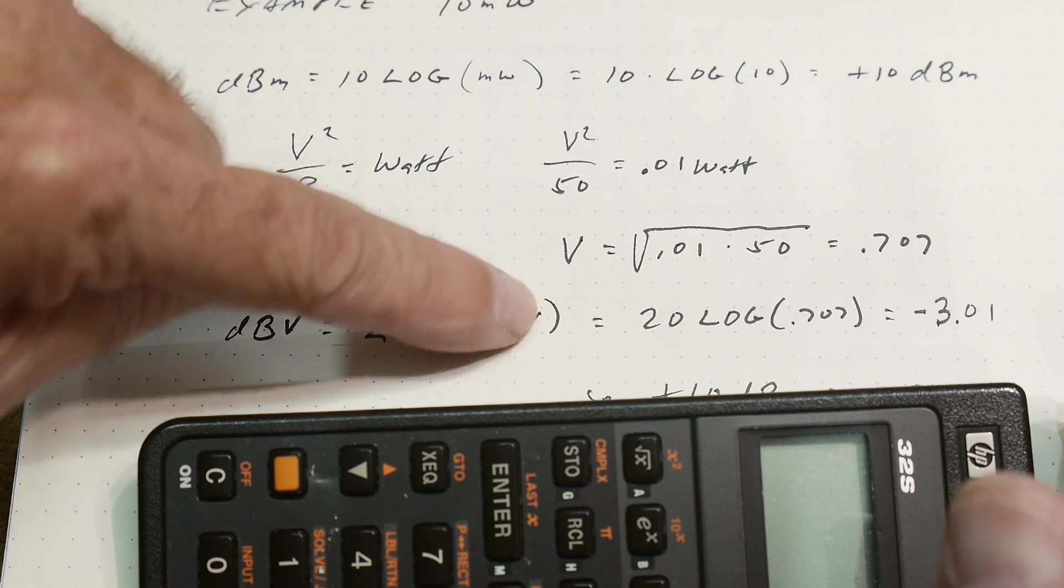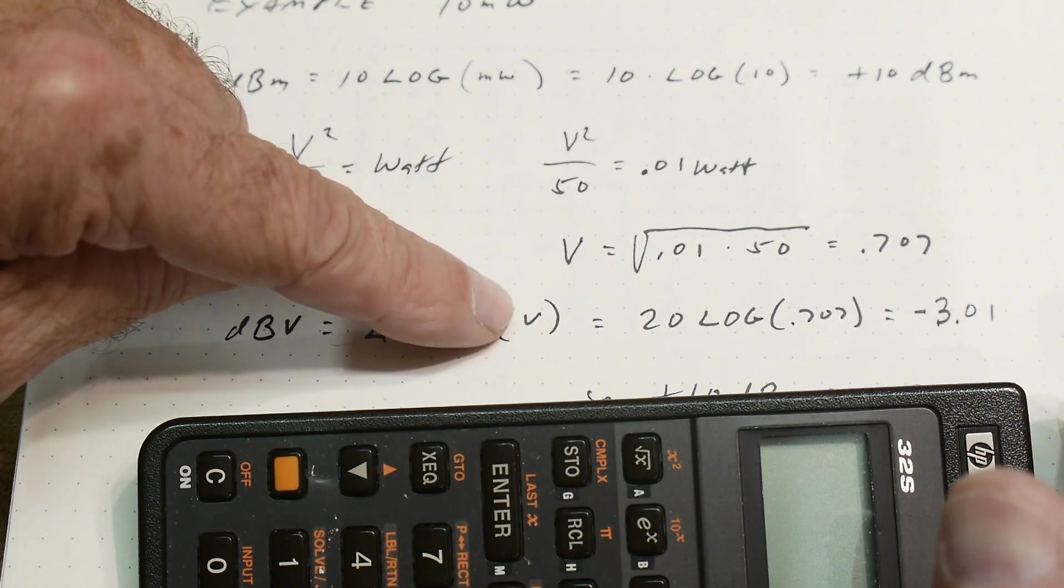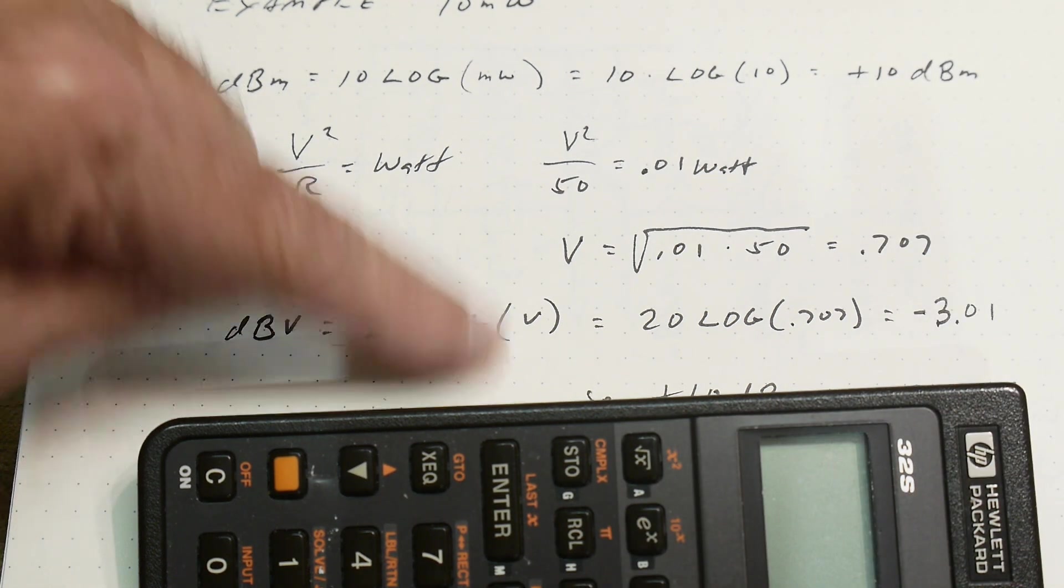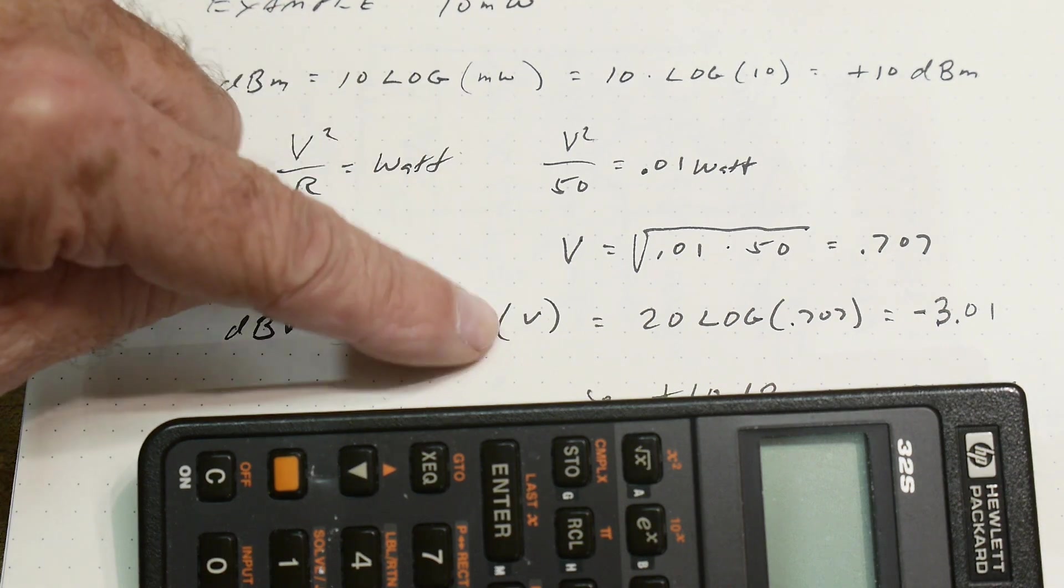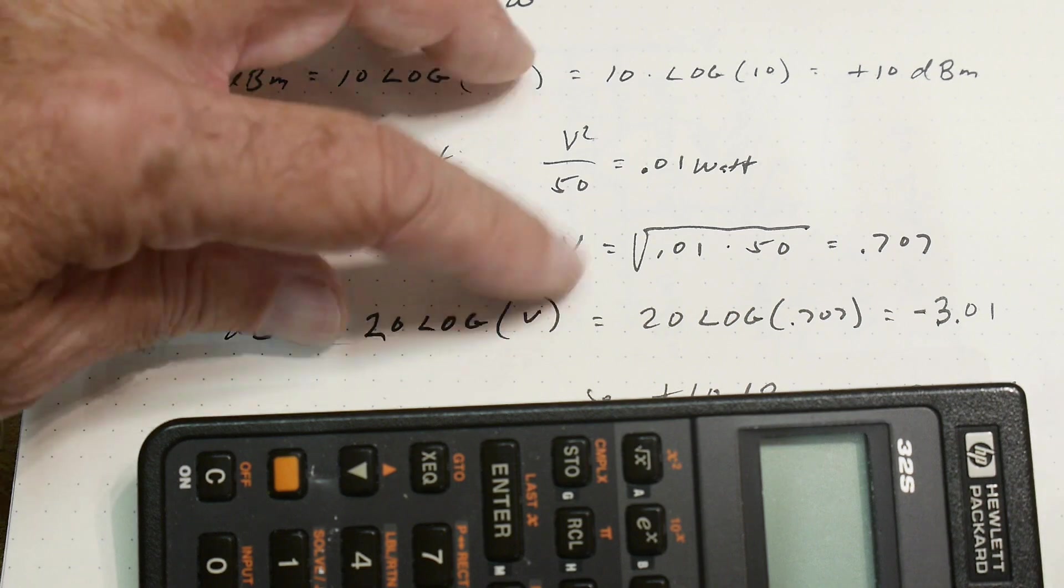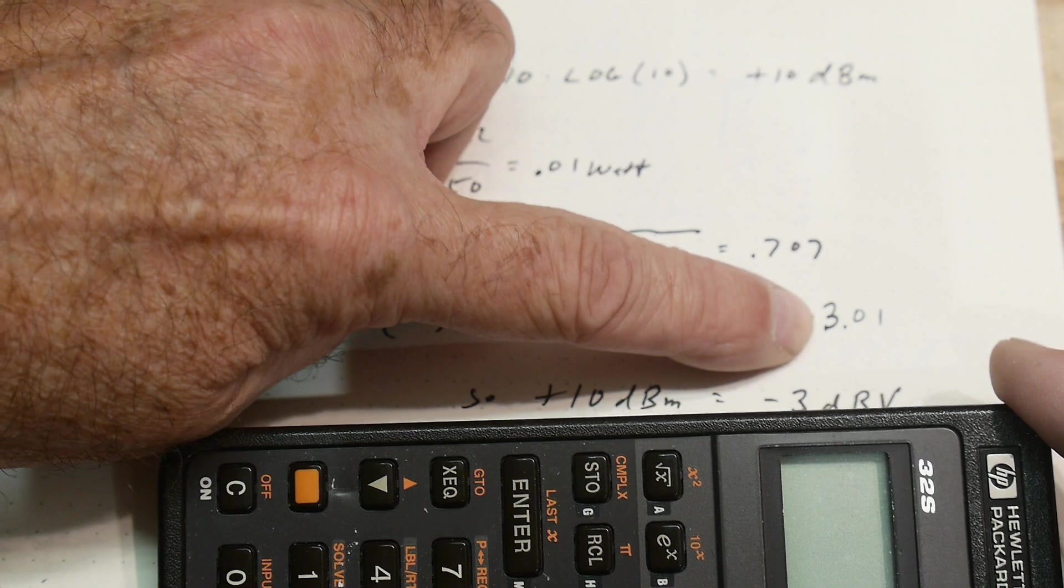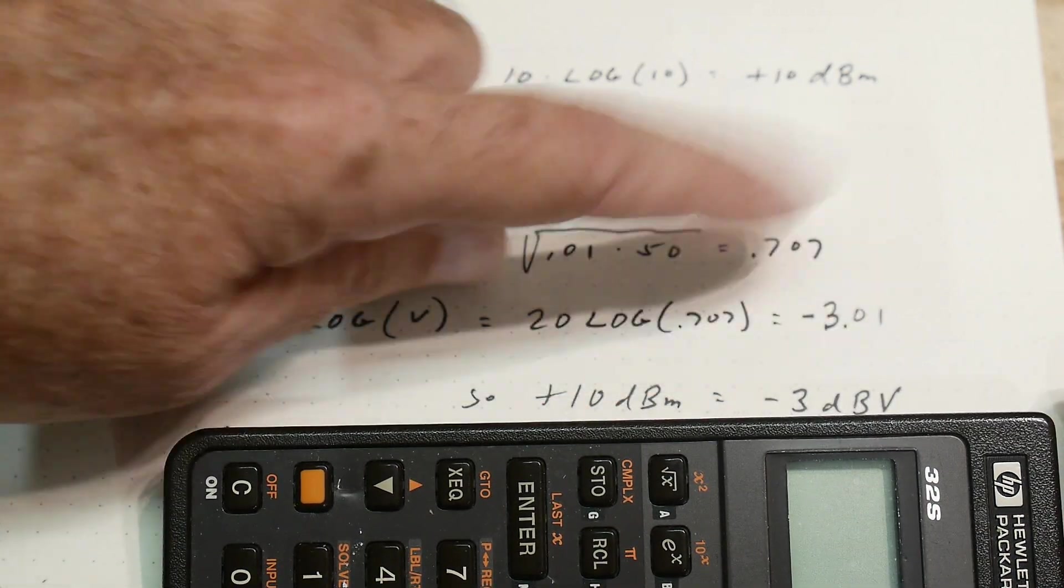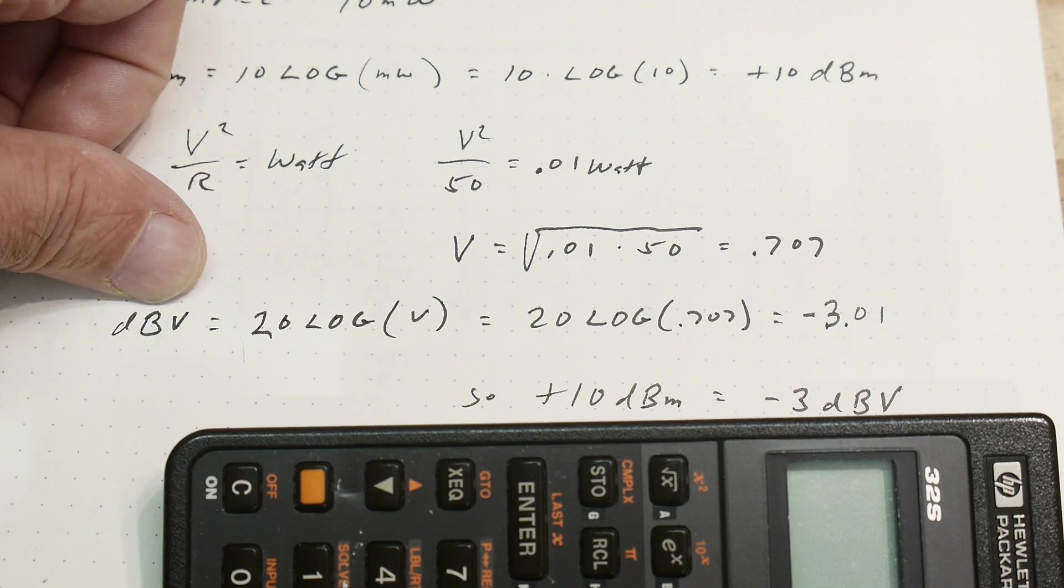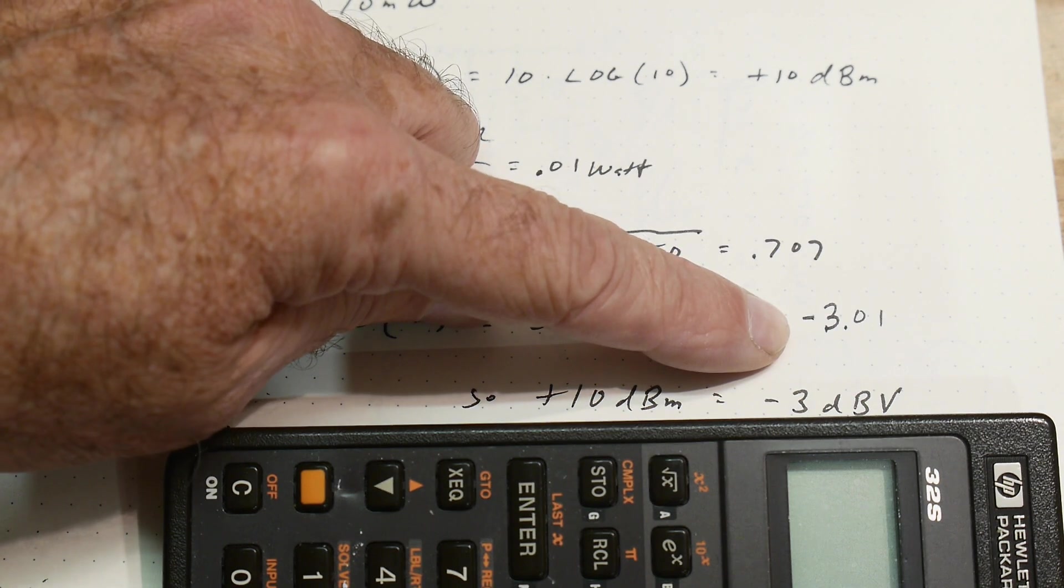Because of this square term, if you have a 2 in the logarithm you can bring it out to the front. And so dB volts are 20 log instead of 10 log. So it's 20 log of your voltage ratio, the ratio is always volts over 1 volt because you always reference to 1 volt. Here you're always referencing to 1 milliwatt. We have 20 log of 0.707 in our case and that's minus 3.01 dB.